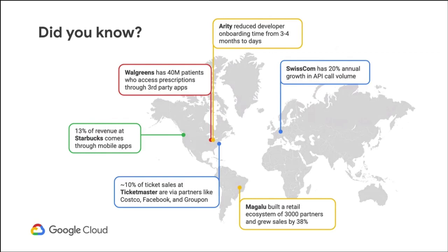There are some really interesting aspects here. For instance, if we look at Starbucks, they put in their annual report that 13% of their revenue comes through mobile apps. Those mobile apps are not built on completely new technology infrastructure, because Starbucks has a big infrastructure already. Instead, what they did is they used APIs — the mobile apps talk to APIs, and the APIs give the mobile apps just what they need for a great user experience based on Starbucks' existing technology.